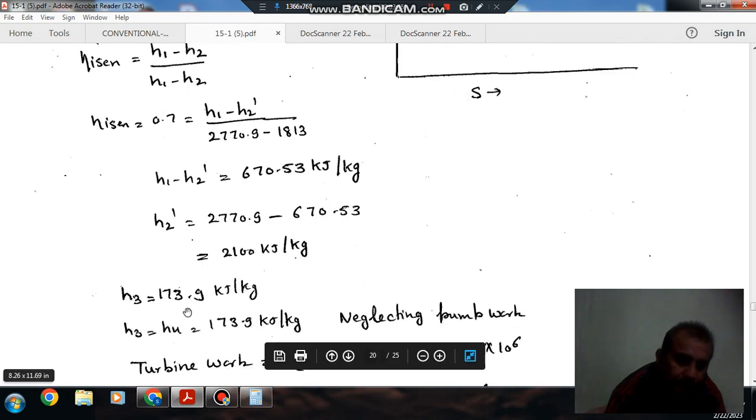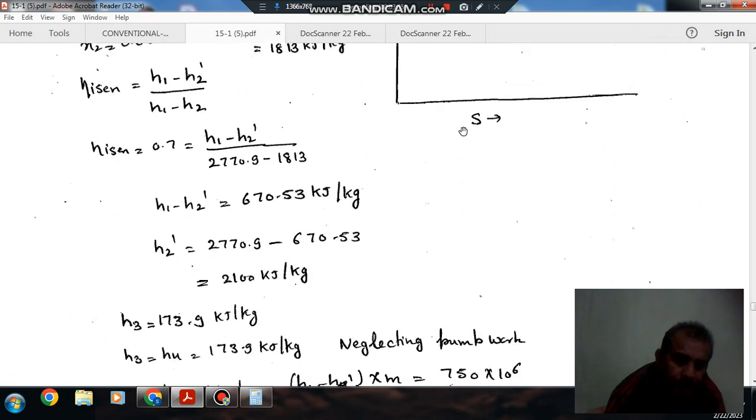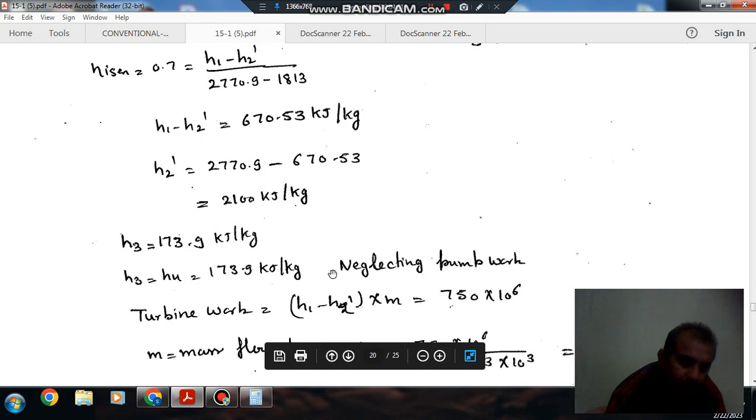That is 173.9 kilojoules per kilogram. Neglecting the pump work—pump work is very small, so we can neglect it—h3 will be equal to h4, so it will be 173.9 kilojoules per kilogram.